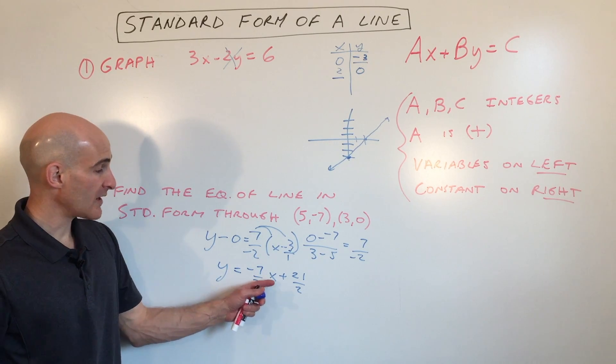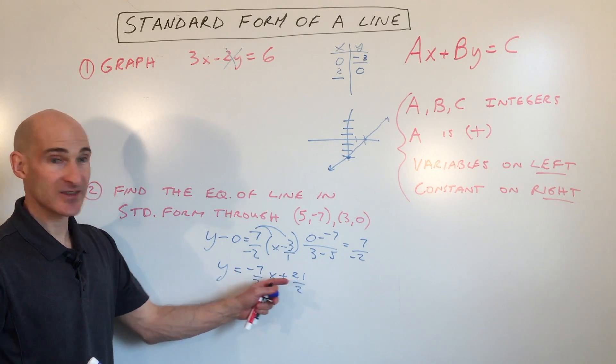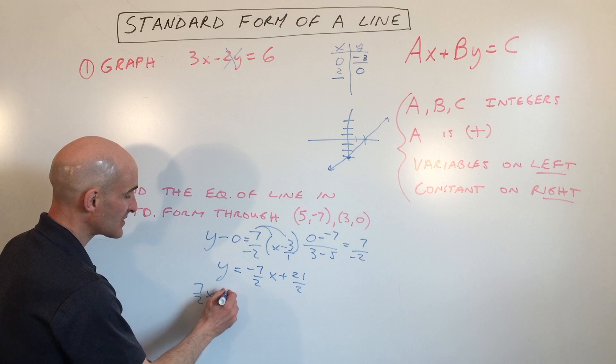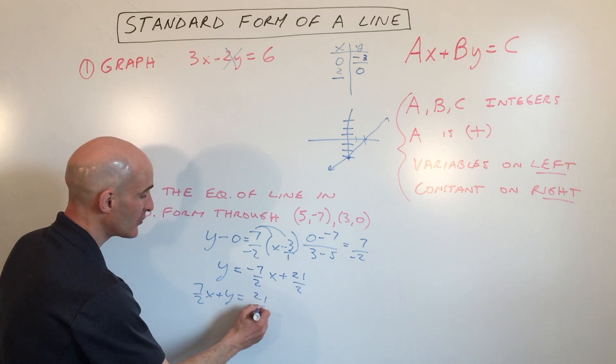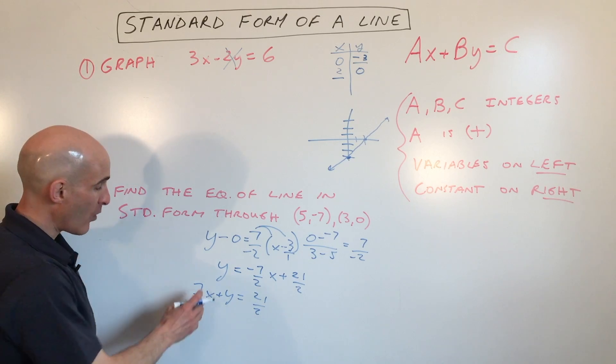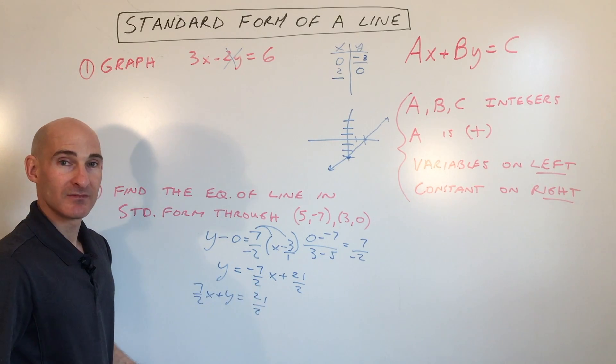Now what we want to do is get the variables on the left and numbers on the right. So I'm going to add the 7 halves x to the other side. That's 7 halves x plus y equals 21 over 2. So I've got the variables on the left, numbers on the right.